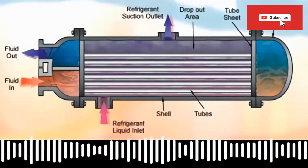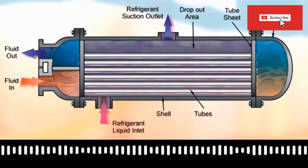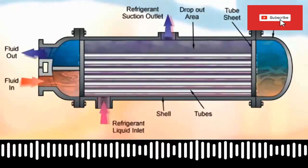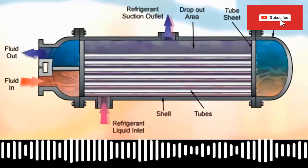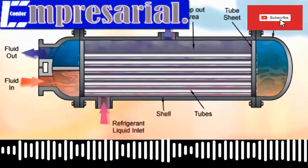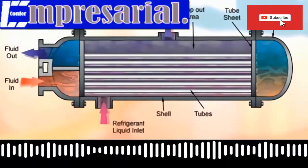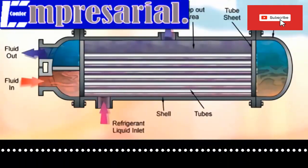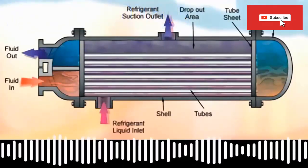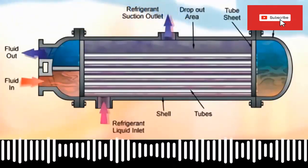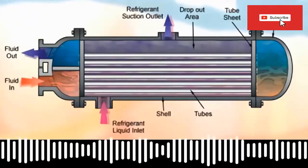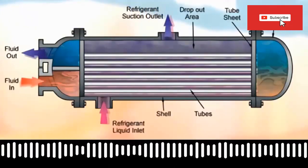21. Oil will accumulate at the bottom of the casing, and there must be reliable lubricant return measures, otherwise it will affect the safe operation of the system. 22. Flooded evaporators reach the closest temperature between the refrigerant evaporation temperature and the water outlet temperature.